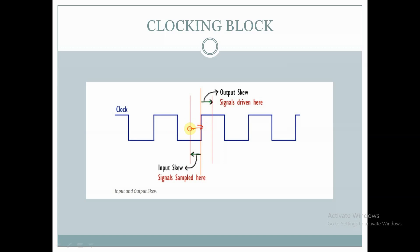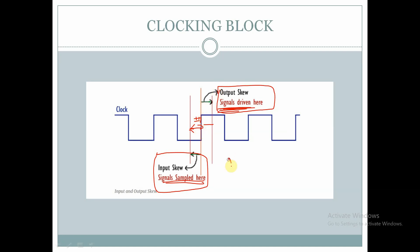Here, before the clock edge we are sampling the signals, and after the clock edge we are driving the signals. Because of this clocking block, there will be no race-around — that is, sampling the signals is happening at one instance and driving the signals is happening at another instance. So the race-around condition is avoided.